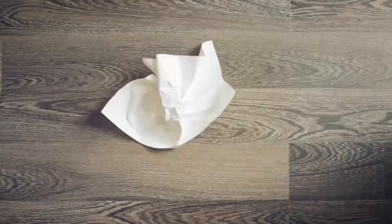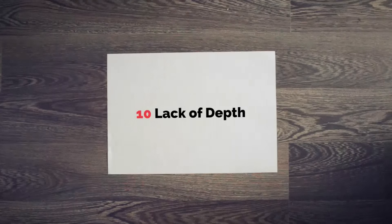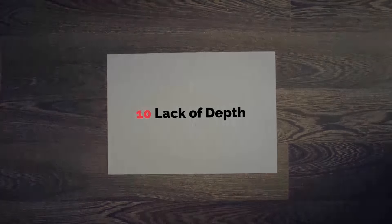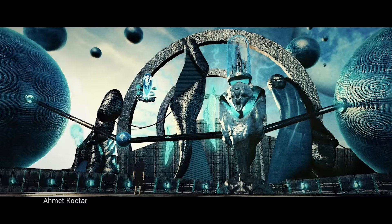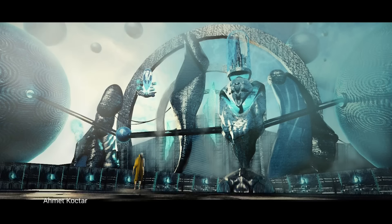And here we have another killer mistake: the lack of depth. Fantastic image by Ahmed — two things it needs right now. First, define the character. Second, add an aerial perspective. Just by playing with aerial perspective, with atmospheric perspective, we added so much depth to it. And in my opinion, this epic sci-fi thing greatly benefits from it.